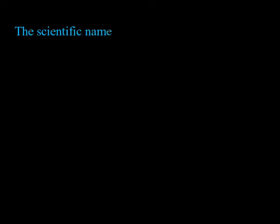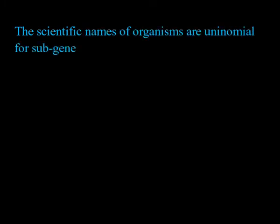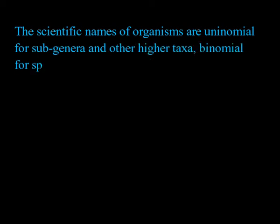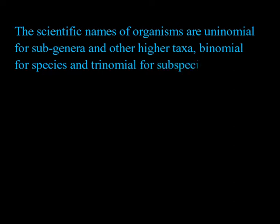The scientific names of organisms are uninomial for subgenera and other higher taxa. It is binomial for species and trinomial for subspecies.